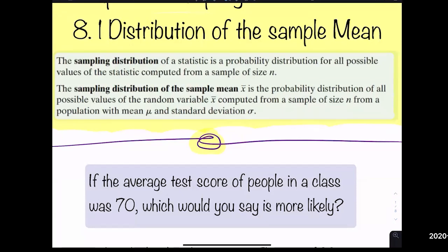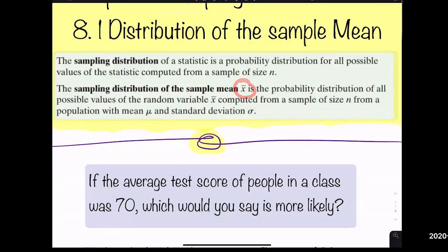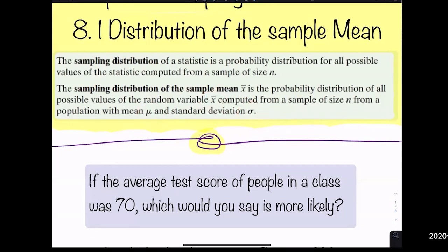The sampling distribution of the sample mean is the probability distribution of all possible values of the random variable x-bar computed from a sample of size n from a population with mean mu and standard deviation sigma. Make sure you know these symbols: x-bar, mu, and sigma — sigma represents the population standard deviation.